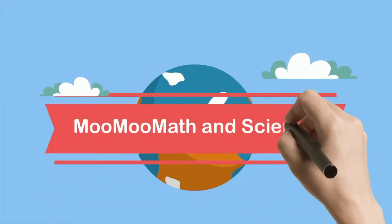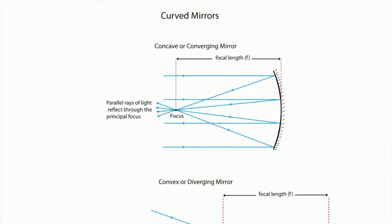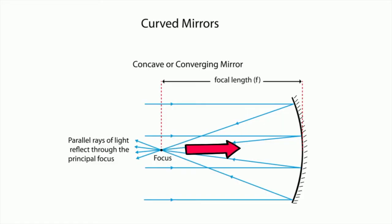Welcome to Moo Moo Math and Science and how light reflects off a concave mirror. A concave mirror is a curved mirror that curves inward in the middle, kind of like you are walking into a cave.